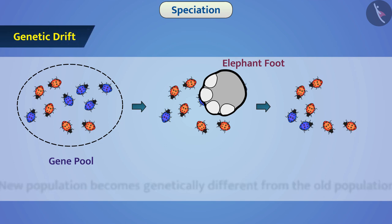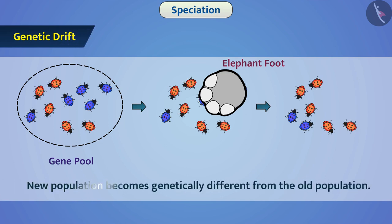Due to this, the new population becomes genetically different from the old population. Often, the evolution of the new population takes place such that there is development of new species.